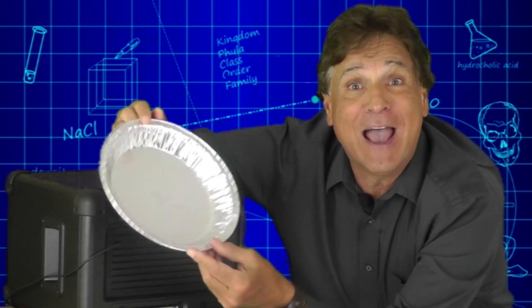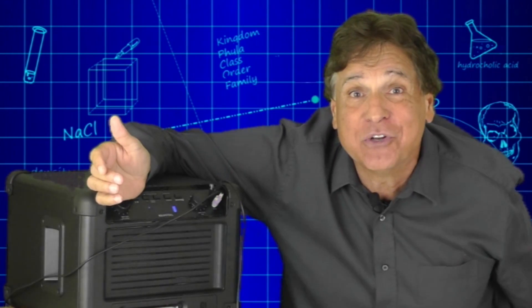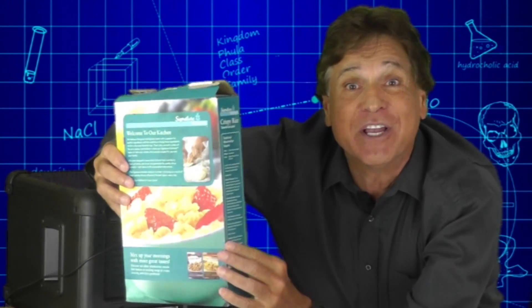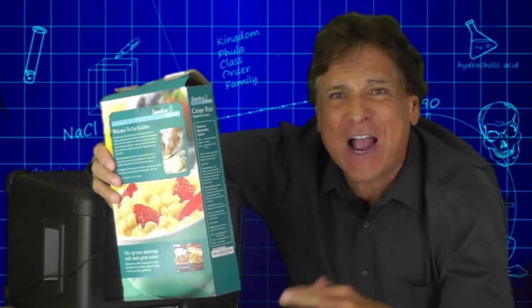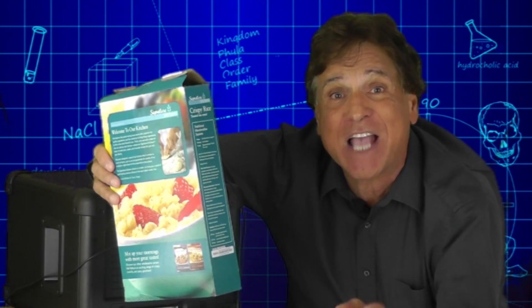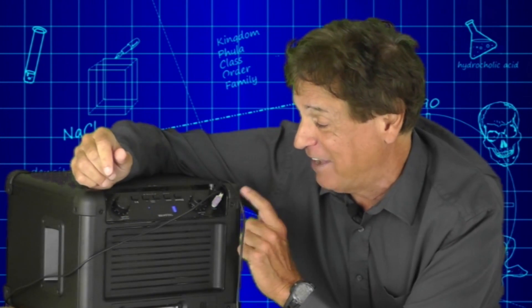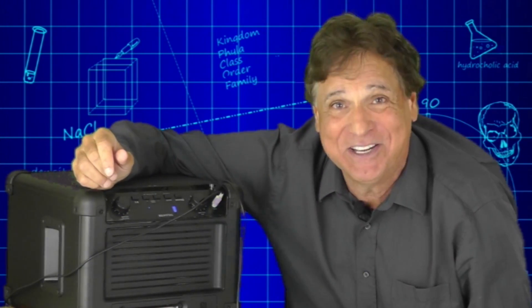An aluminum pie pan makes a great tambourine. You'll also need some cereal. Any cereal works. Try to get the smaller, lighter grains because they will respond better to sound energy. You'll also need some sort of amplification device, and I've got a speaker system right here.